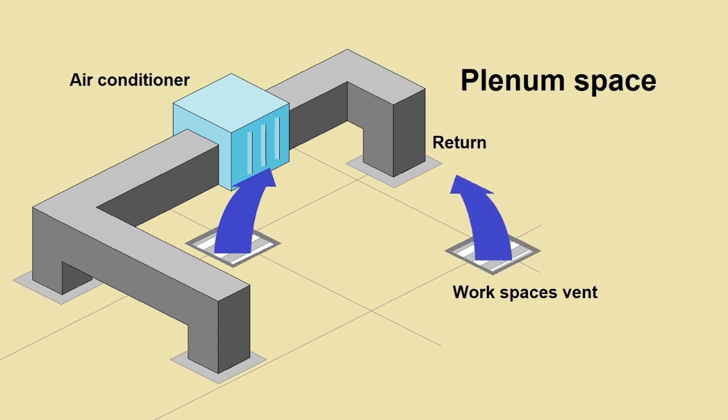This means that in a plenum space, our ventilation system is drawing in the combined air, conditioning that air, and then sending it back down to the workspace.